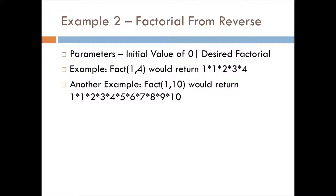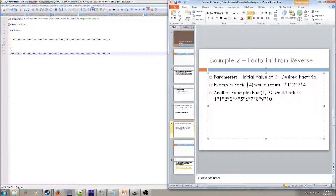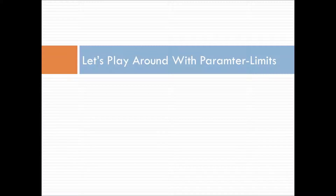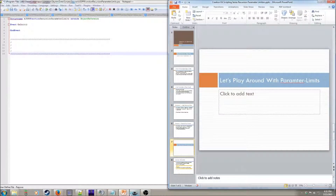Let's look at a case where we'll have a fixed value. I'm going to use the factorial function, since we've already touched that, but we're going to write it in a different way this time. Instead of having only one parameter for the desired factorial and counting down, we're going to give it the initial value of zero and then have the fixed value that is the desired factorial. So we would have fact of zero comma four, and that would return one times one times two times three times four. Let's go implement these two functions.